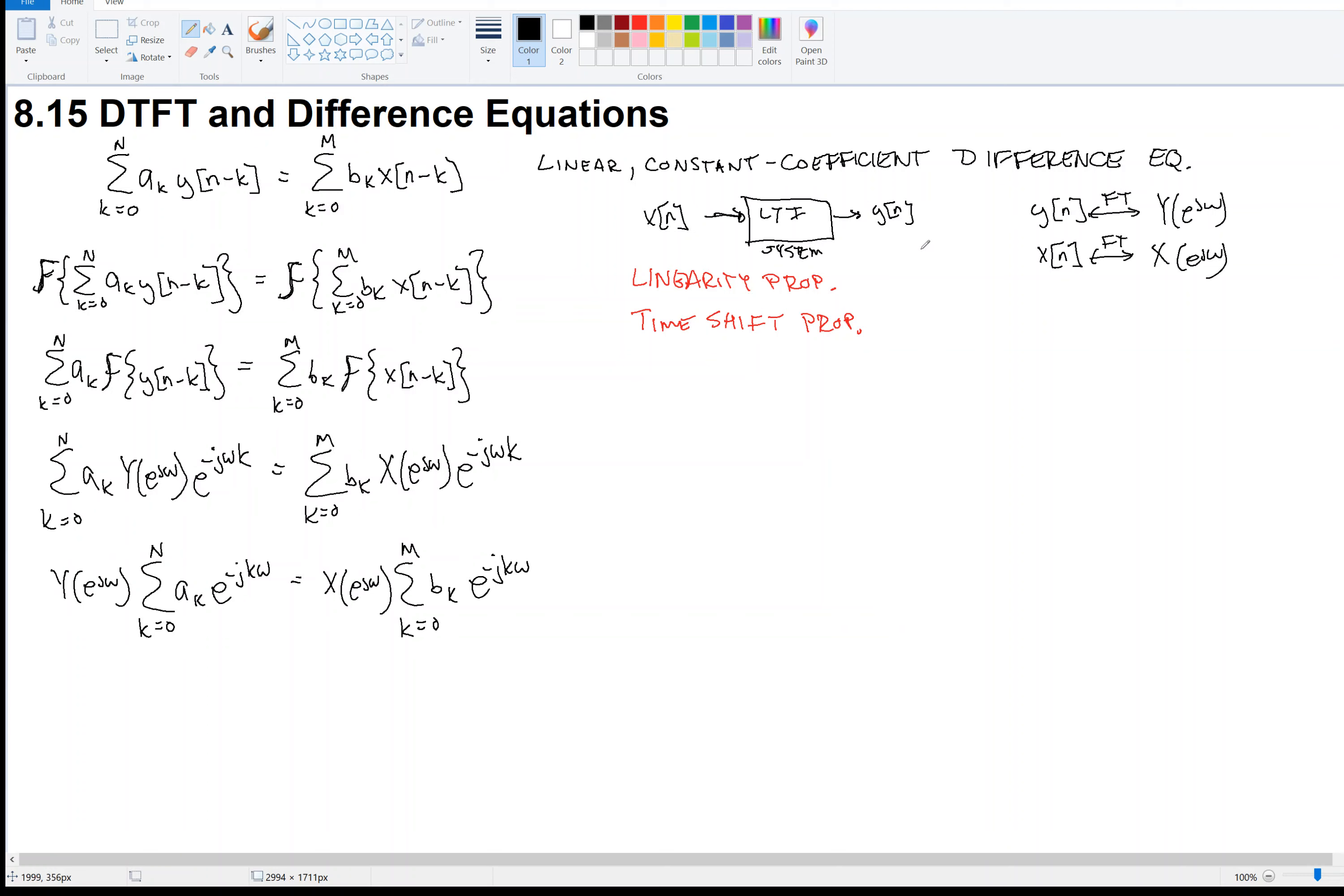Now, now we're going to apply the convolution property. So let us remember what that is. Recall that in time, the output is the input convolved with the impulse response. So the convolution property says you can convolve in time, but convolution in time is multiplication in frequency. So multiplication in frequency, and this capital H is the frequency response. That's what we're after. So since I have y on the left and x on the right, I can find the ratio of those two things to get the frequency response. Y over x.